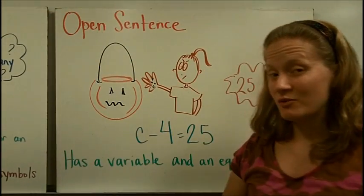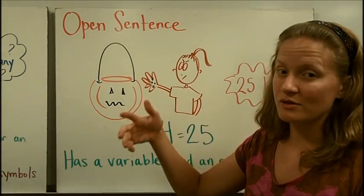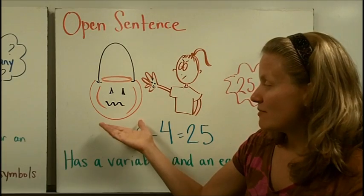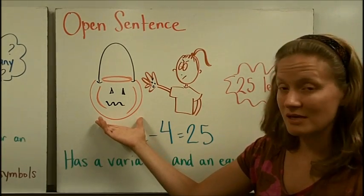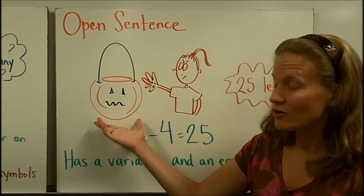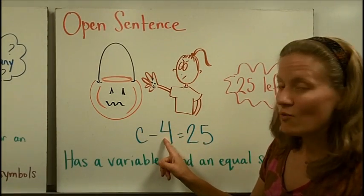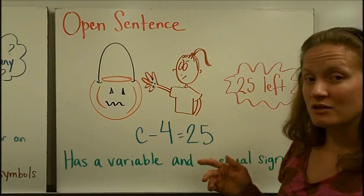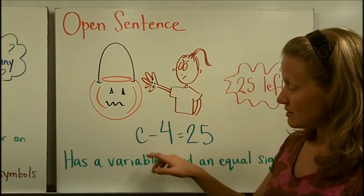We talked about how an expression would not have an equal sign, but an open sentence does include an equal sign. So let's go back to one of the first stories we had. Remember, you don't know how many pieces of candy are in here, so we're using the variable C to represent the amount. Your little sister takes four pieces out. Well, when you get home, you counted your pieces and you realize you had 25 pieces left.